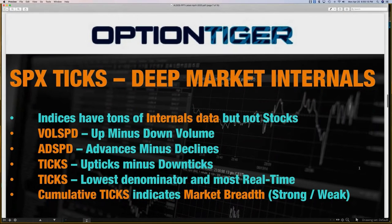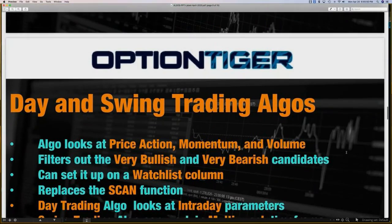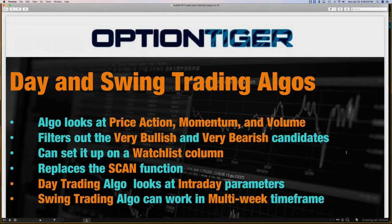The SPX deep market internals indicator maintains a cumulative tick count of all 500 stocks, giving you a very good indication of market breadth — whether it's strong, weak, or neutral. The day trading and swing trading algos are key because you can put them onto a watch list column, replacing the scan function. As long as you have your watch list, the very bullish and very bearish candidates will be filtered right to the top, so you don't have to cycle through all the stocks manually.